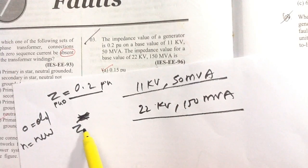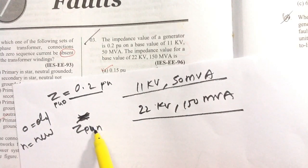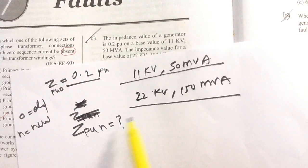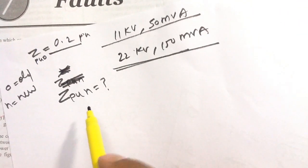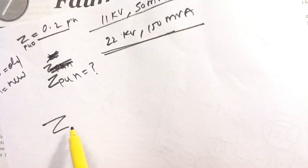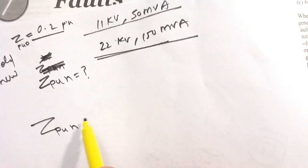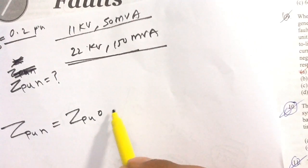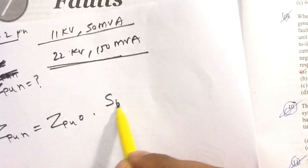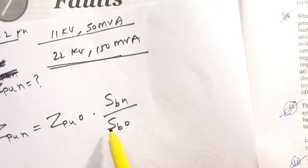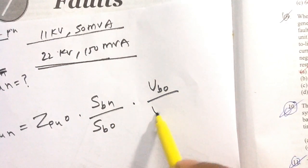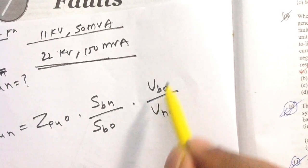How much is the new per unit impedance? New per unit impedance equals old per unit impedance into new base power divided by old base power, into old base voltage divided by new base voltage — all squared.